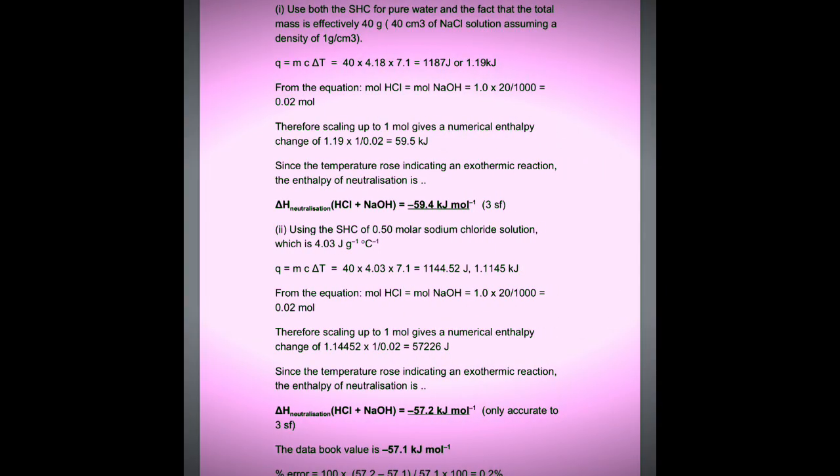There were 20 cm3 of 1 M HCl and 20 cm3 of 1 M sodium hydroxide in a polystyrene container. I extrapolated the graph and found the temperature rise was 7.1 degrees C. We're going to use the specific heat capacity of water, 4.18 joules per gram per kelvin. The total mass was 40 g. Q equals mass times 4.18 times 7.1, giving 1187 joules or 1.19 kilojoules.